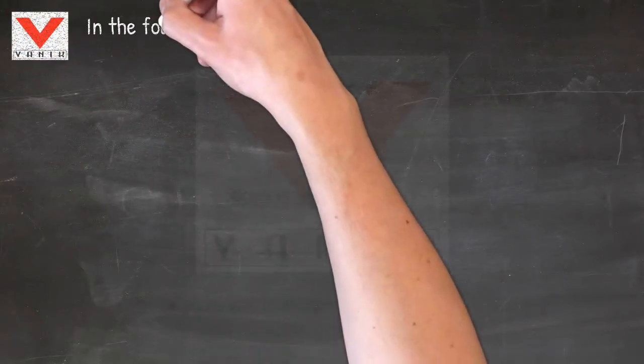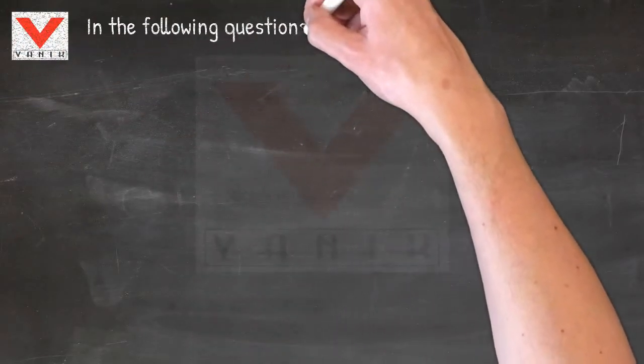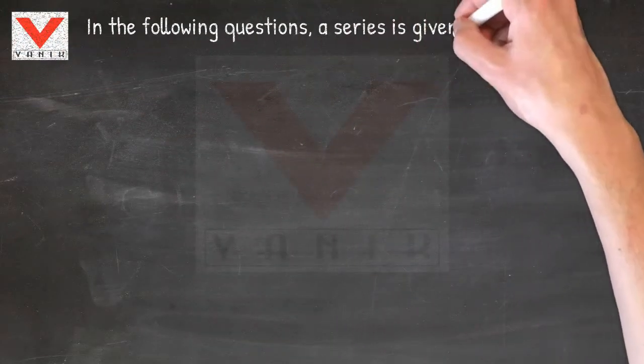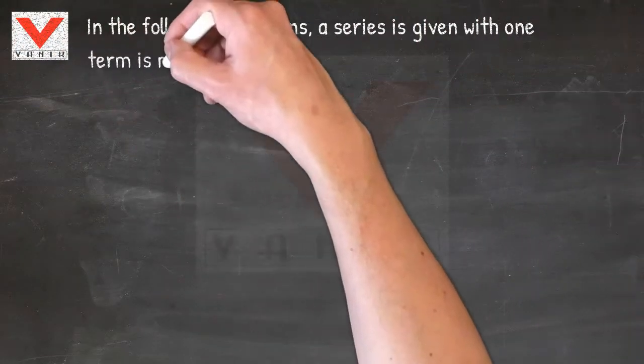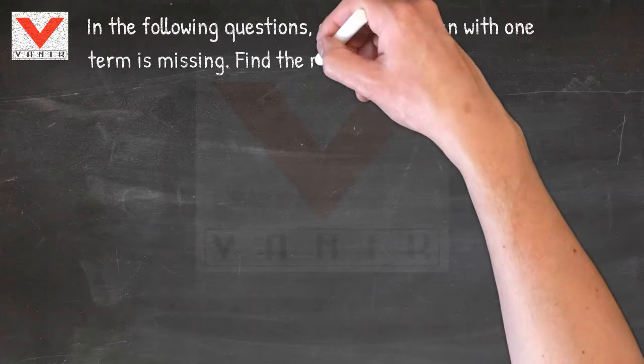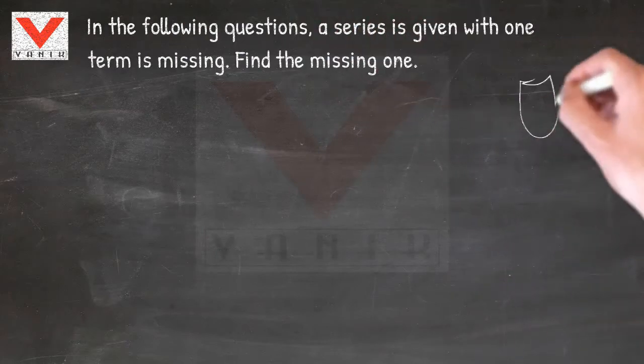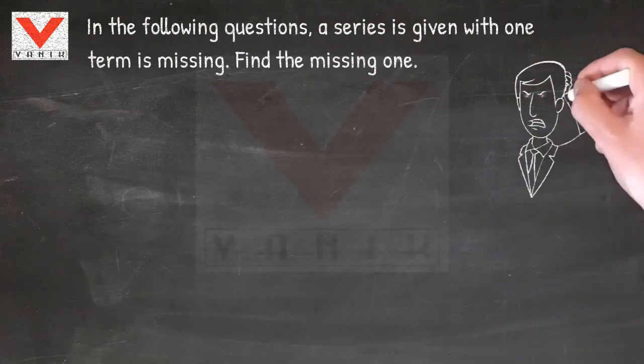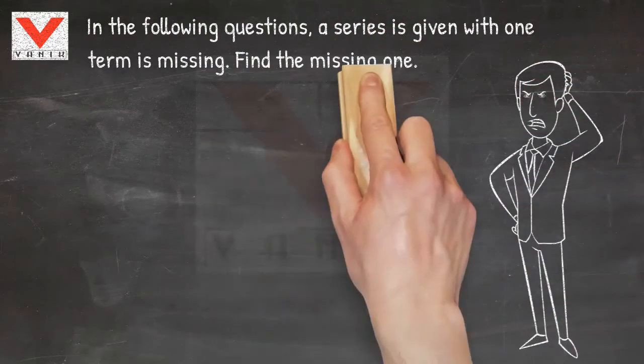Warnock reasoning tips. In the following questions, a series is given with one term missing. Find the missing one.